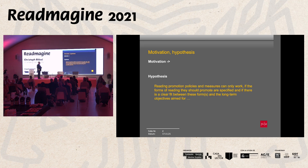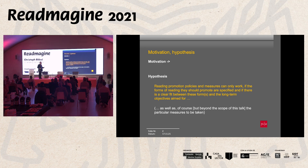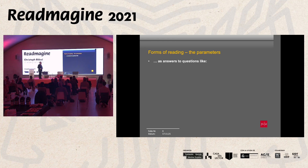My hypothesis is that reading promotion policies and measures can only work if the forms of reading they should promote are specified, and if there is a clear fit between these forms and the long-term objectives aimed for. Of course, the measures should also be appropriate, but this is beyond the scope of this talk.